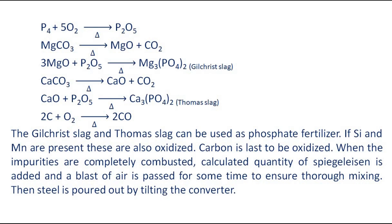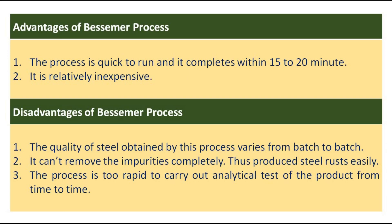Carbon is the last to be oxidized. When the impurities are completely combusted, a calculated quantity of spiegeleisen is added and a blast of air is passed for some time to ensure thorough mixing. Then steel is poured out by tilting the converter.